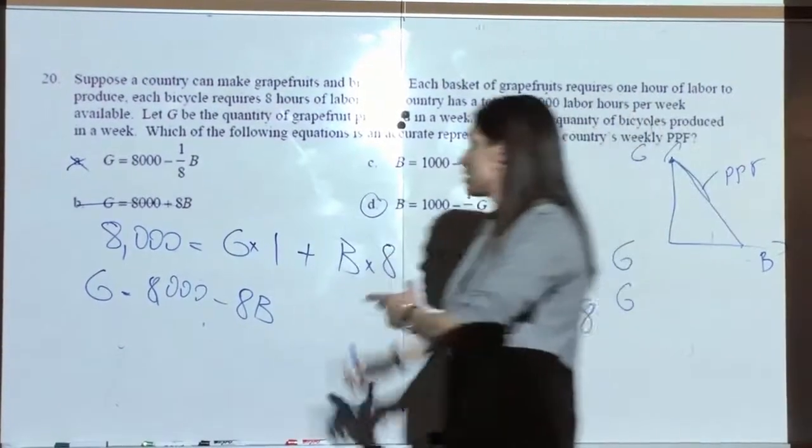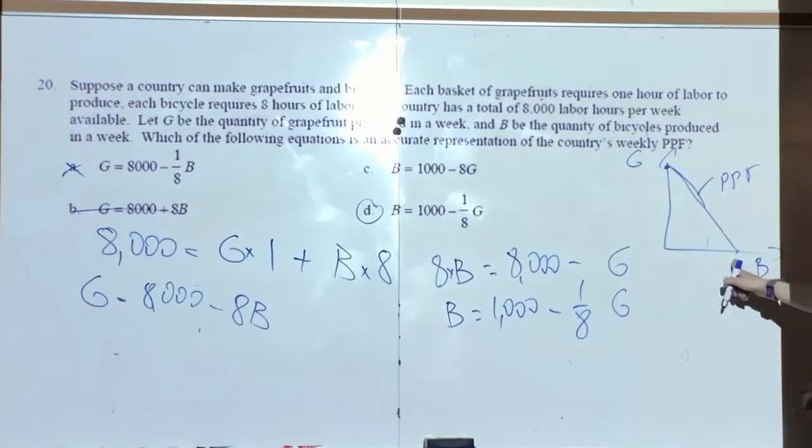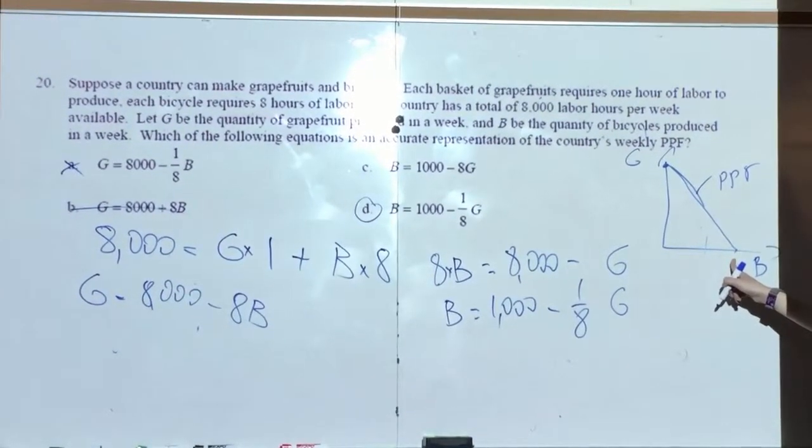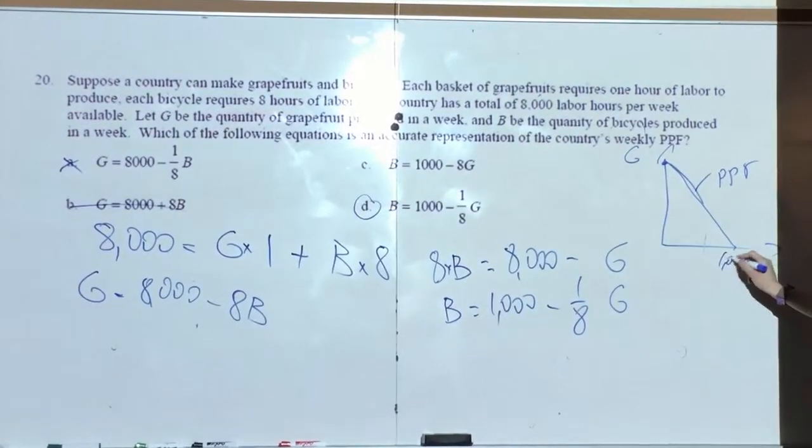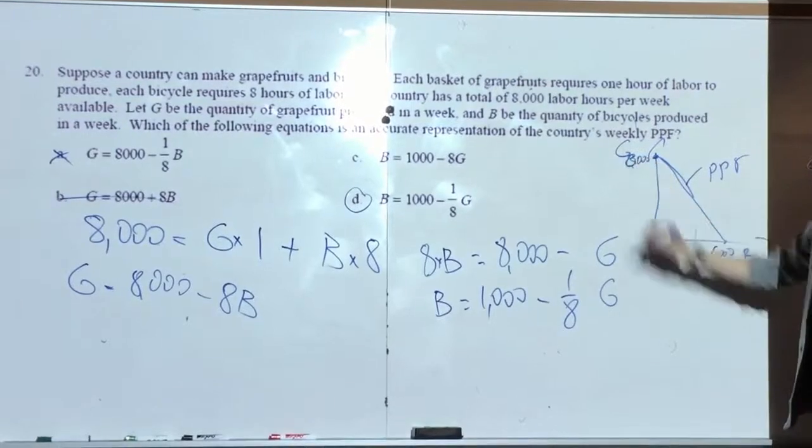And this, if I spent all of them on B? 1,000. 1,000.